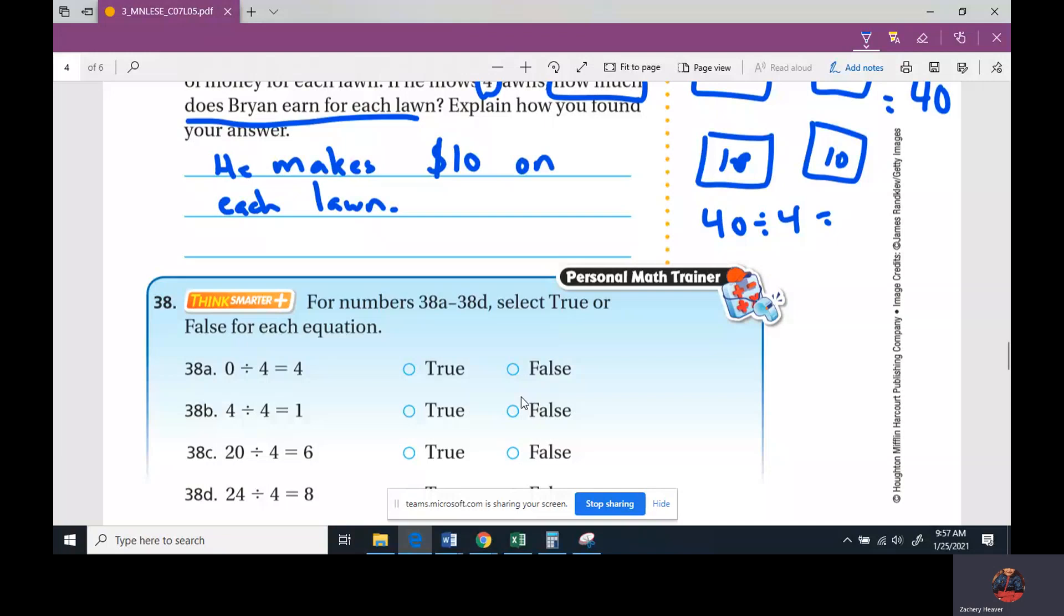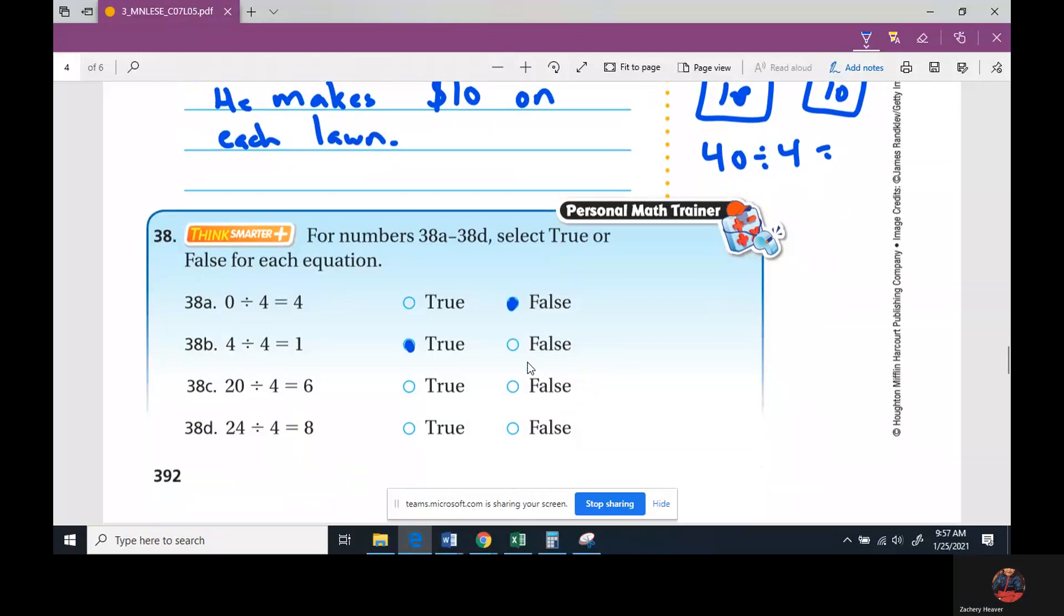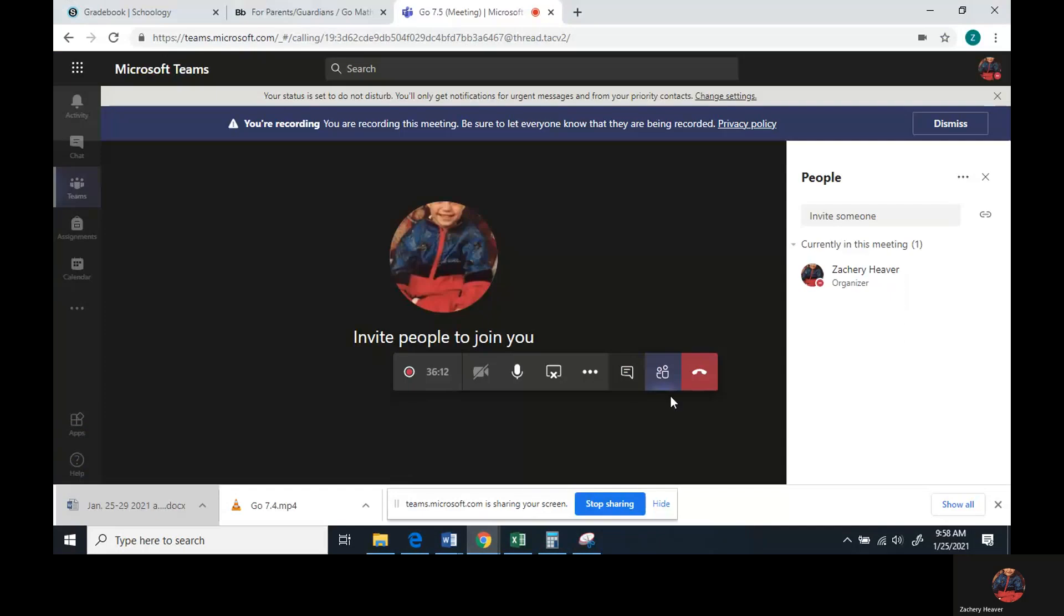The true or false, we're going to see if we can go quick on it. Zero divided by four is four. True or false? False. Anything divided by zero will be what? Just like multiplication. If it's multiplied by zero, it's going to be zero. If it's divided by zero, it's going to be zero. Four divided by four equals one? True. Twenty divided by four equals six? False. Lastly, twenty-four divided by four equals eight? False. Good. Let me stop my recording real quick.